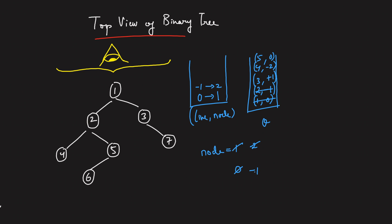Next, take node 3 with line plus 1. Line 1 is not in the map, so store node 3 as the first node on line 1. Node 3 has no left child, but has a right child 7 — push 7 with line 2. Next, take node 4 with line minus 2. Line minus 2 is not in the map, so store node 4. Node 4 has no children, so it's complete.